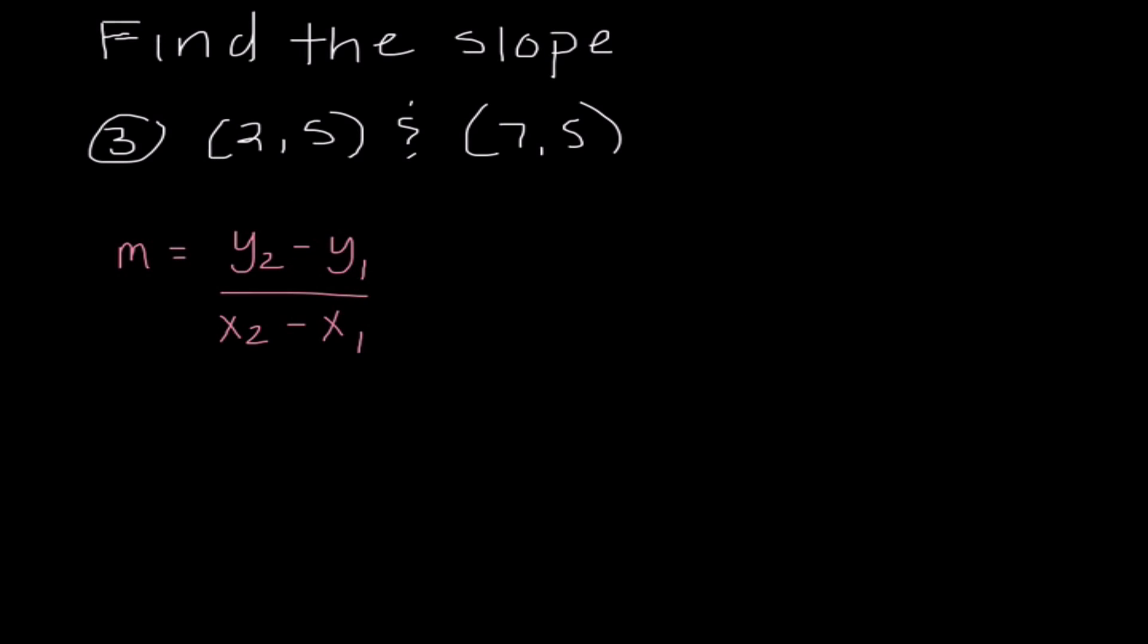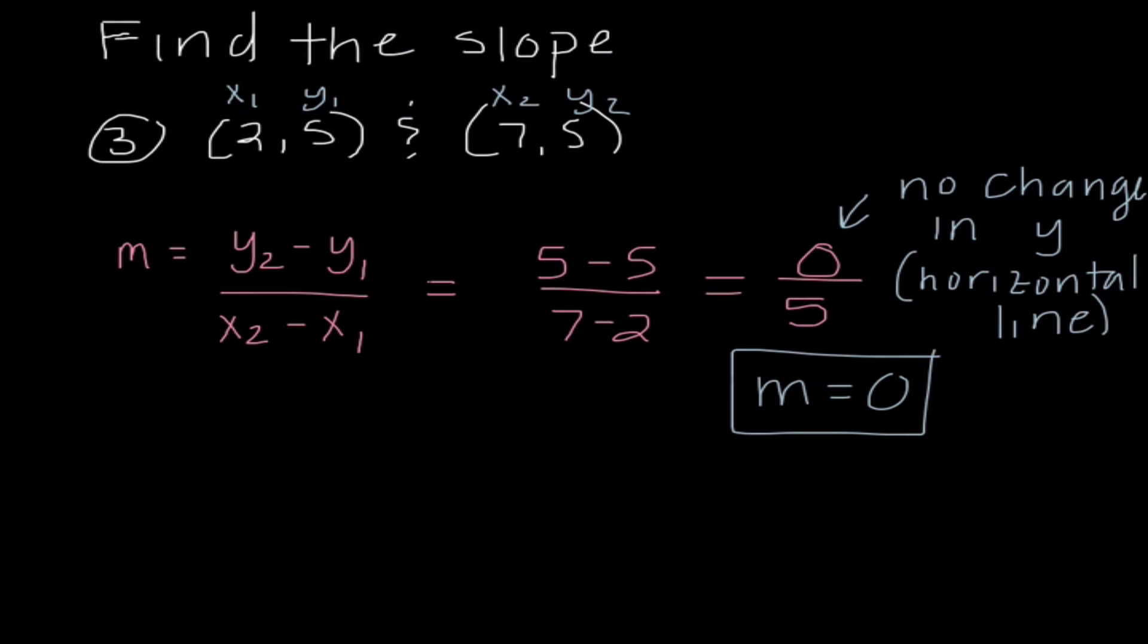So the final example we're doing on this, 2, 5, and 7, negative 5. When I substitute in, I get 5 minus 5 over 7 minus 2. So I get 0 over 5. This time, there is no change in the y value, which would make this a horizontal line. And we would say m is equal to 0. Now, if we look back at the ordered pairs, this time we noticed the y values were exactly the same. So I could just write m equals 0 right away, and that would be totally fine.